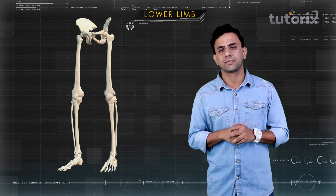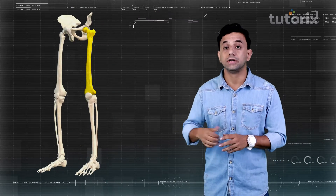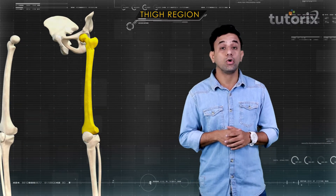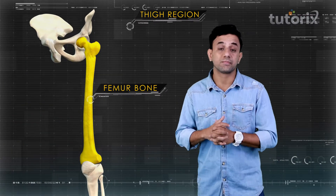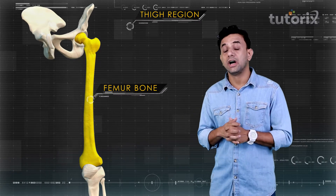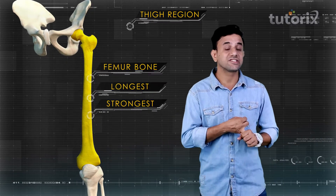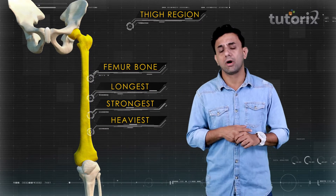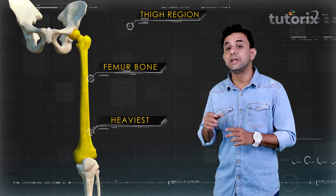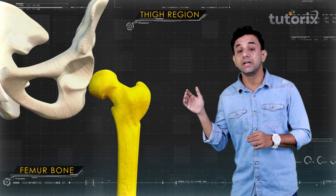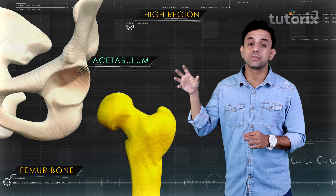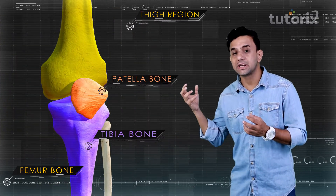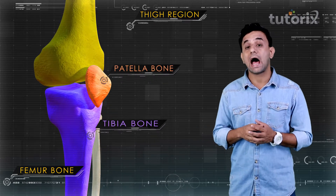In the thigh region, the bone named femur is present. The femur is the longest, strongest, and heaviest bone in our body. It is attached proximally to the acetabulum, which is a vinegar cup-shaped socket, and distally it is attached to the tibia and the patella.